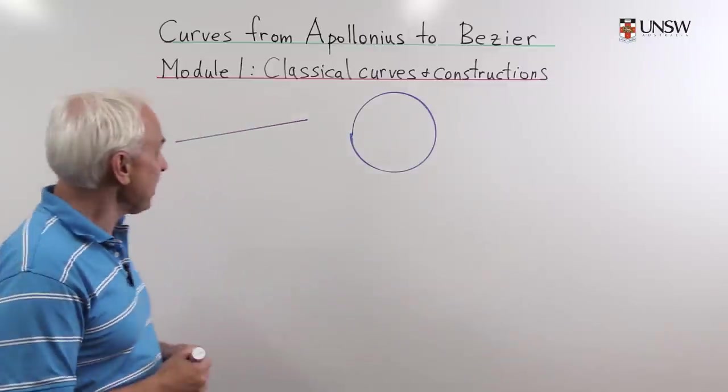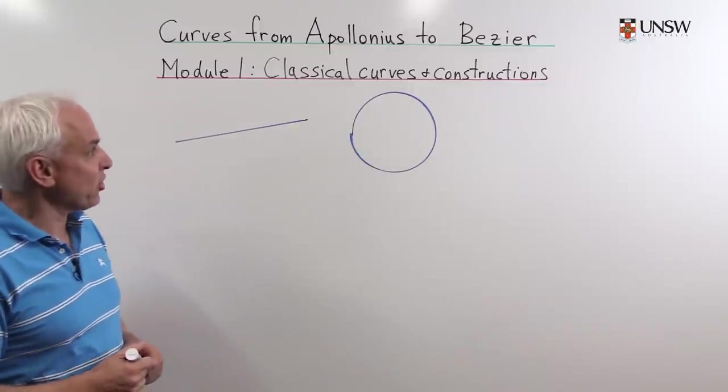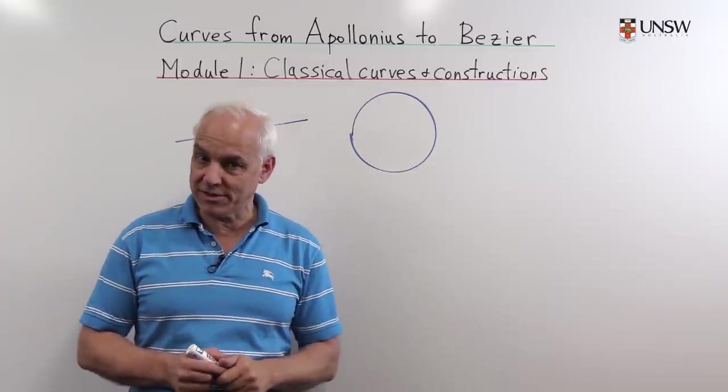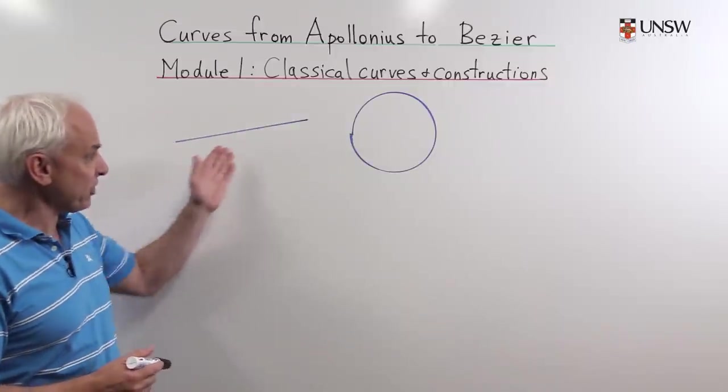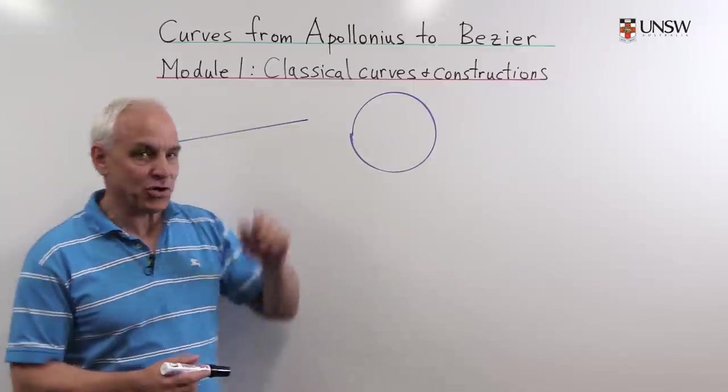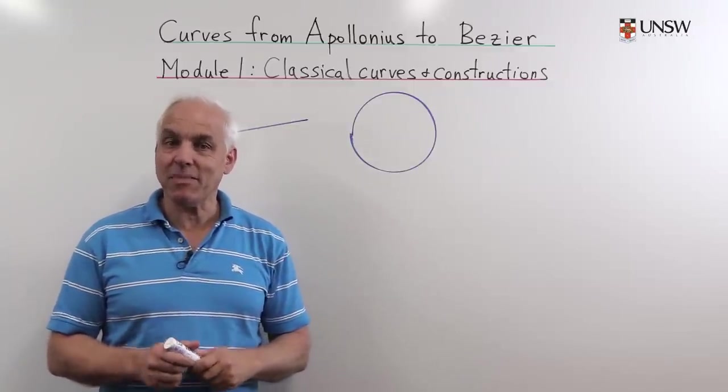The story begins with the ancient Greeks, as does much of mathematics, who were interested in curves for geometrical reasons and also for astronomical reasons. Their favorite curves were the simplest ones, the line and the circle, but they also of course investigated a bunch of other ones too.